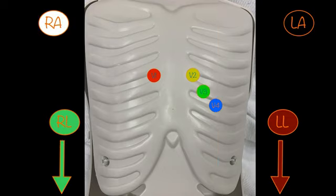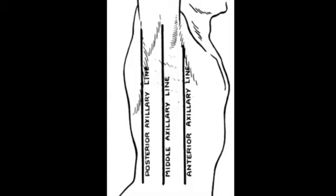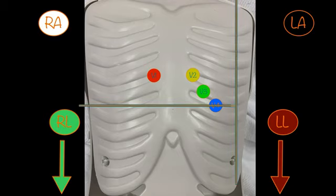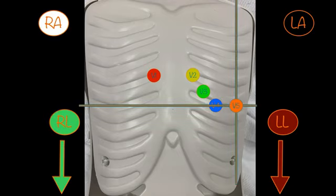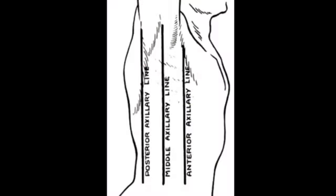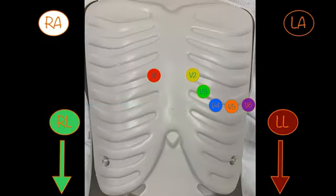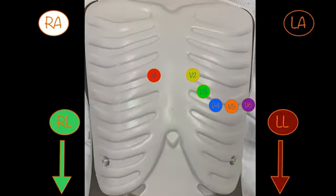Lead V3 sits between V2 and V4. V5 is on the anterior axillary line of the same horizontal plane as lead V4. Lead V6 is on the middle axillary line on the same horizontal plane as leads V4 and V5.